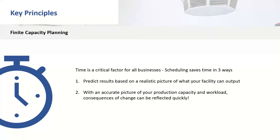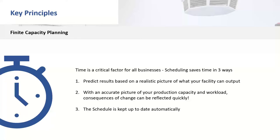Second, with an accurate predictor of your production capacity and workload, if you want to change things or things change outside your control — a due date is pulled forward because it's critical, or you have a machine breakdown — the scheduling system will show you the impact very quickly, whereas in Excel you have to do a lot of rework. Finally, the schedule is kept up to date. By booking data — either using Seeky or another system — that data can be automatically uploaded into the scheduler, close to real-time, and is available when you reschedule again.